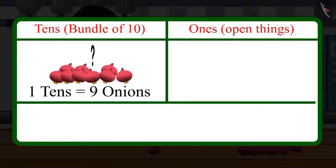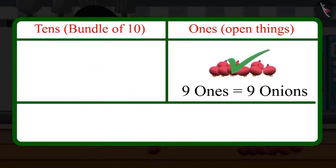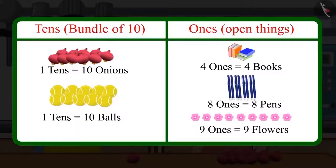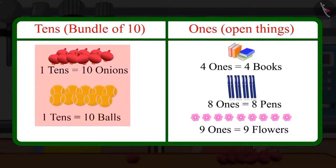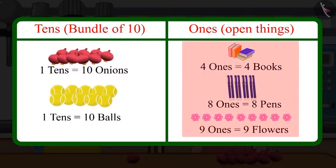Okay, Choto, tell me something. Can 9 onions together make 1 ten? No, Mommy. For this, we will need 1 more onion. This will be 9 1s. Absolutely right, Choto. This means that 10 onions or 10 balls — all those things present in a group of 10 — make a ten. But 4, 8 and 9 things, which are less than 10, they are 1s and we count them individually.